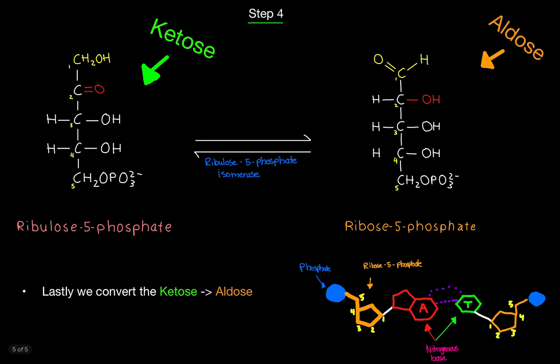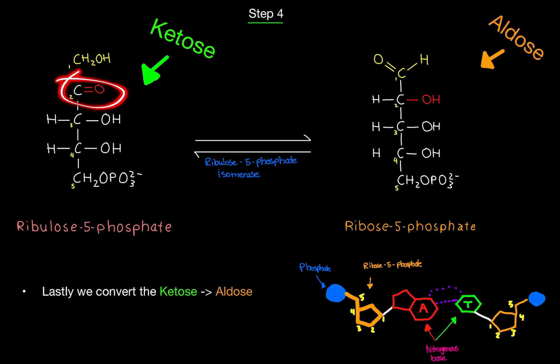Step four, the last one: we're turning a ketose into an aldose — converting a ketone into an aldehyde. An aldose is an aldehyde sugar, and a ketose is a ketone on a sugar. We take ribulose-5-phosphate and use the enzyme ribulose-5-phosphate isomerase — this is a reversible reaction — and we turn it into ribose-5-phosphate. The double-bonded oxygen becomes a hydroxyl group. That is step four and the final step.